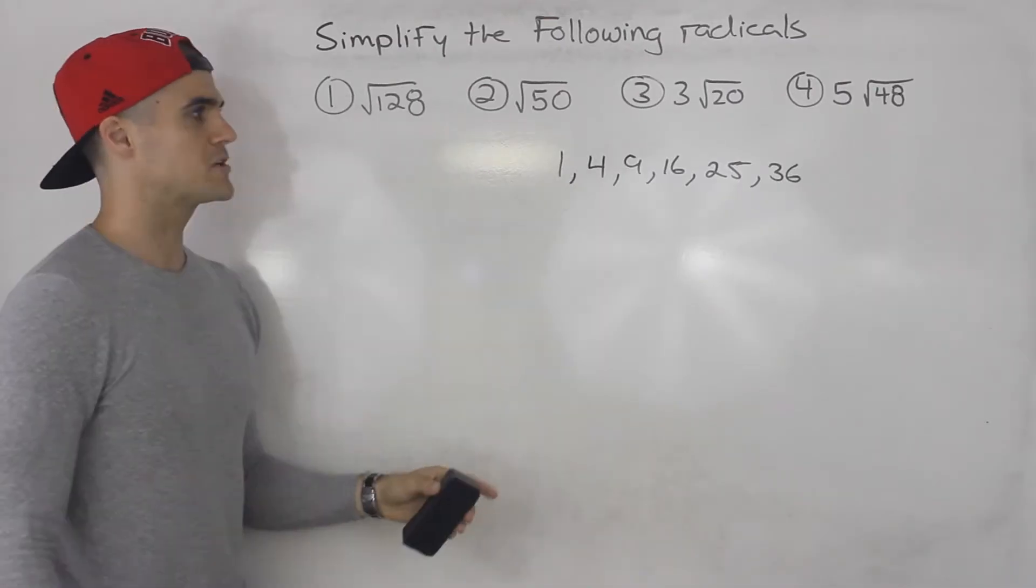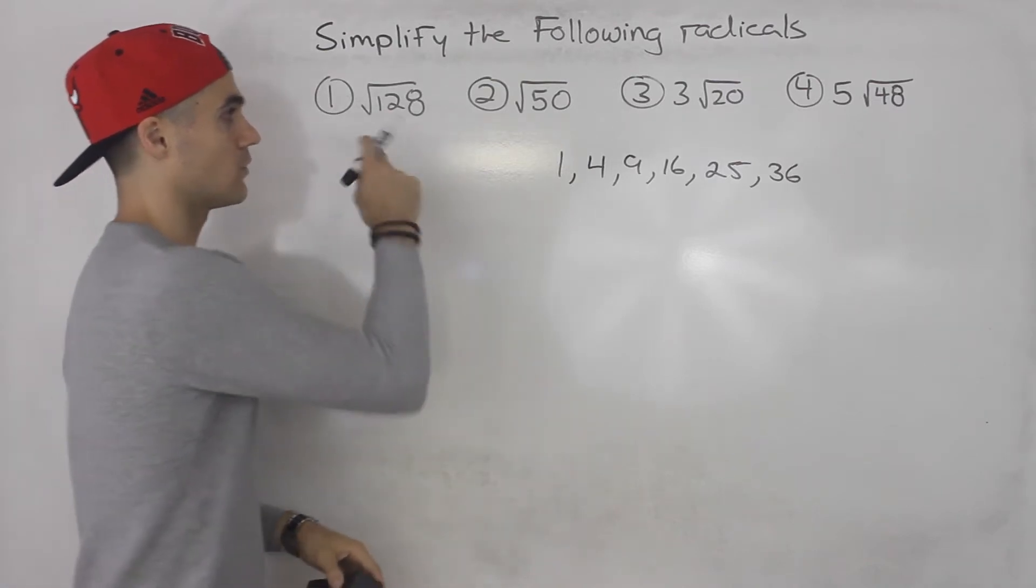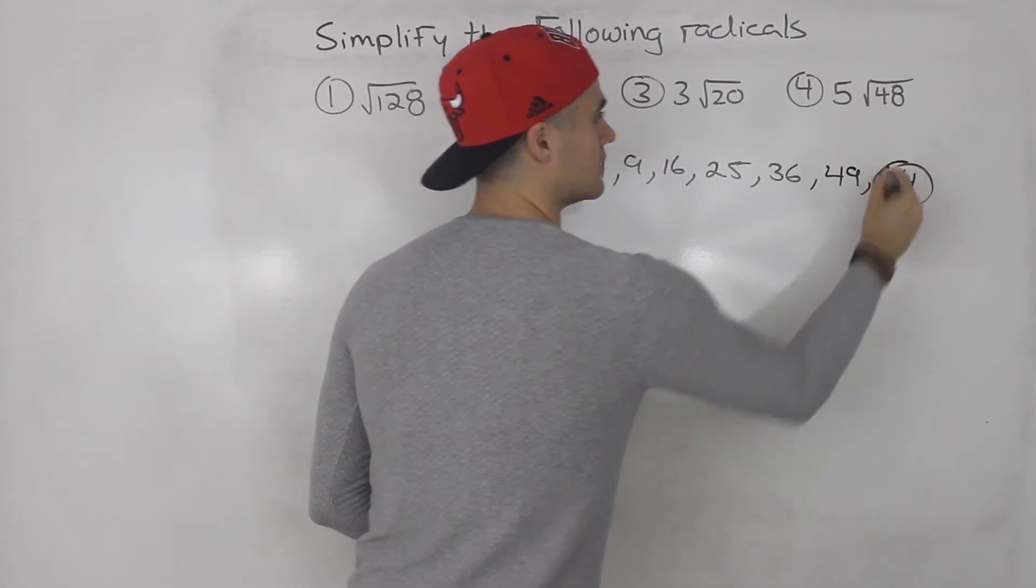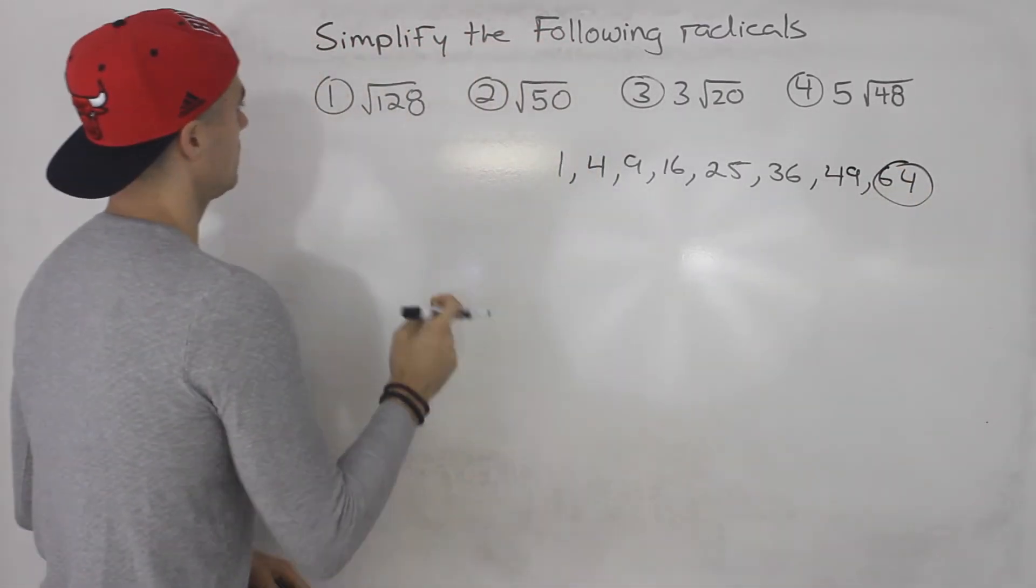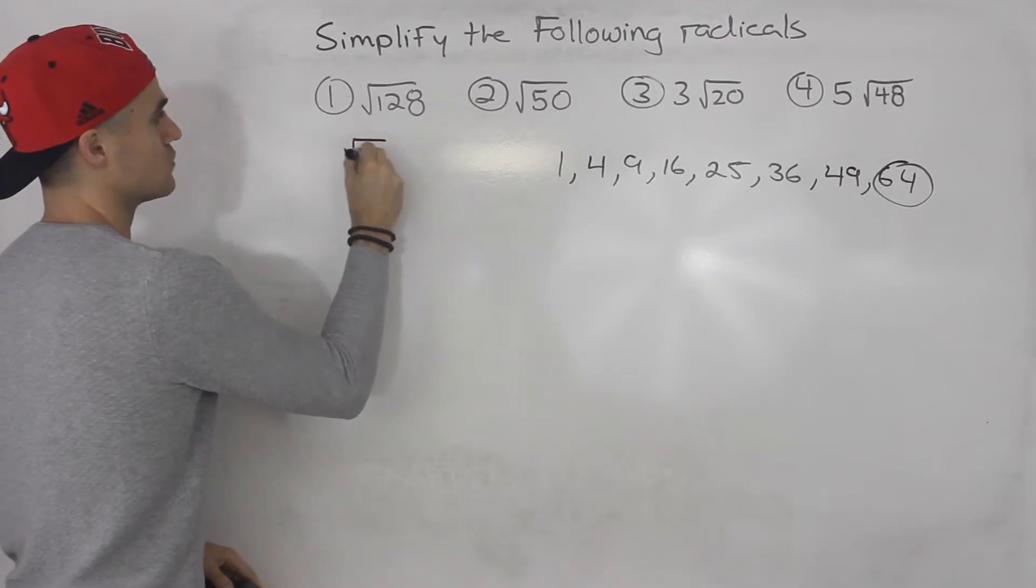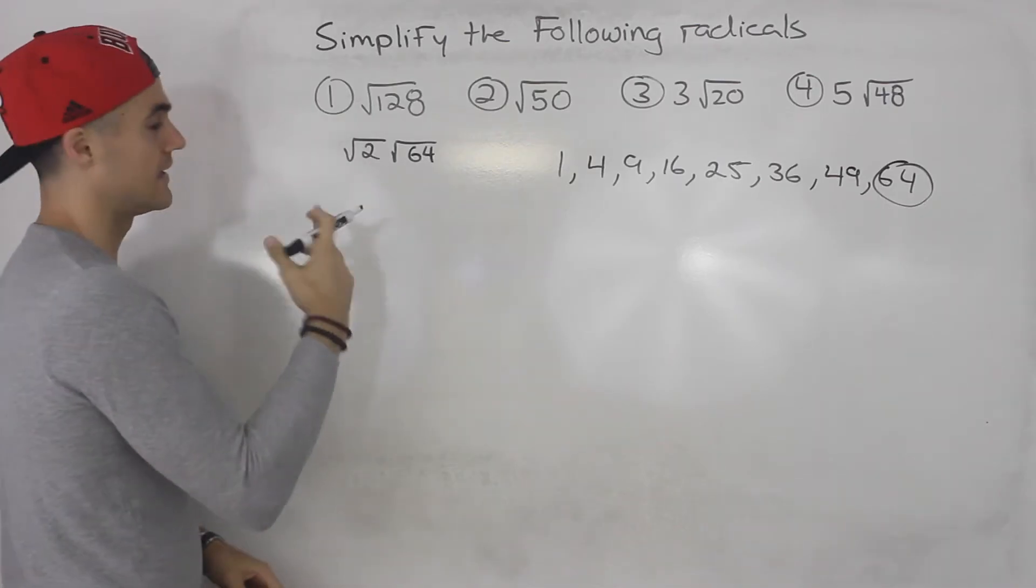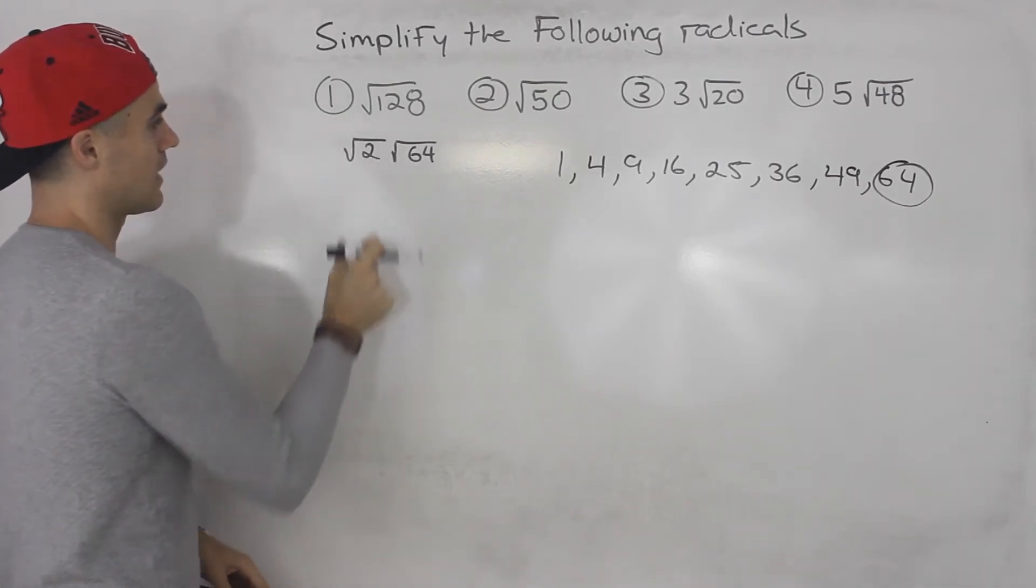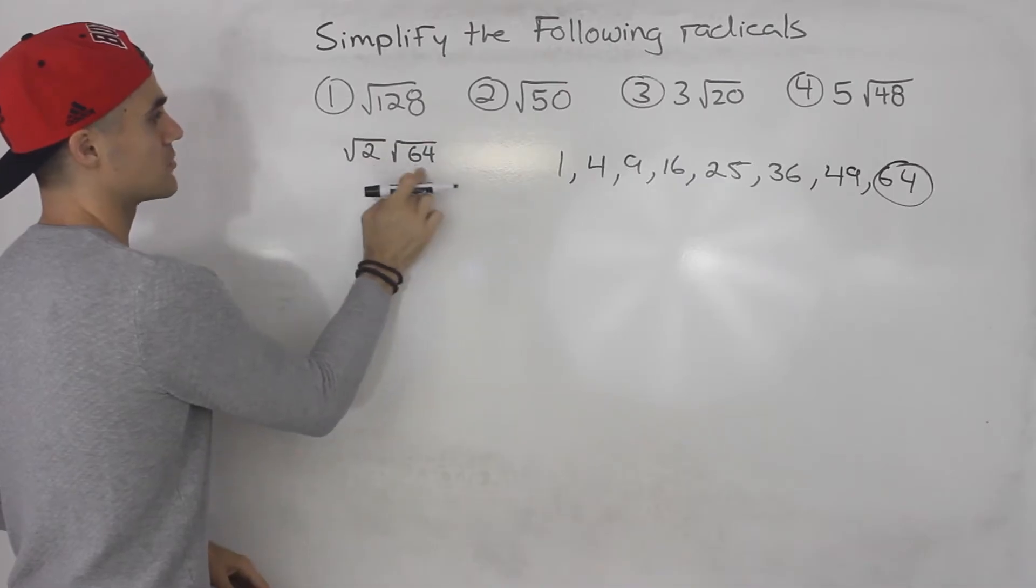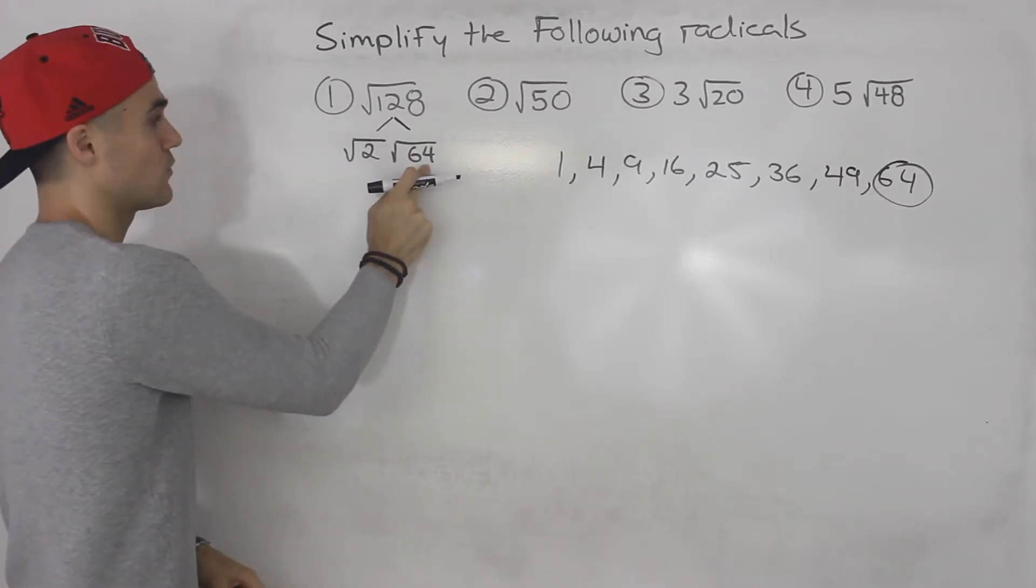Well, 128, we can actually divide it by 64. So what we would do is we would split this radical up into root 2 times root 64, because 64 times 2 is 128. And when you're multiplying radicals like this, you can just multiply the numbers that are inside the radicals. So we're splitting up the 128 into 2 times 64.